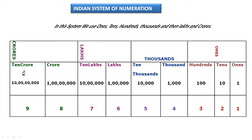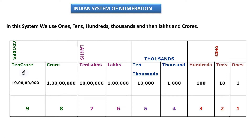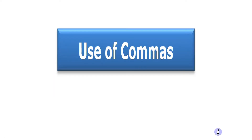We are learning up to crores because in sixth standard the syllabus goes up to crores only. In this system we use ones, tens, hundreds, thousands, lakhs, and crores. This table has periods and places, and these places are helpful in reading large numbers.